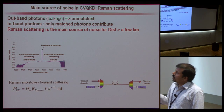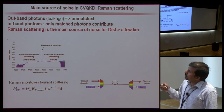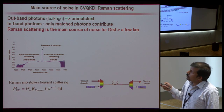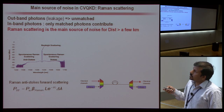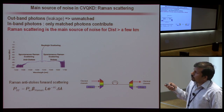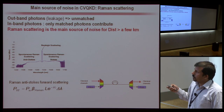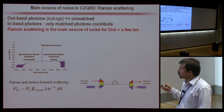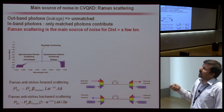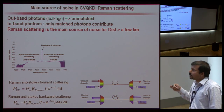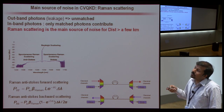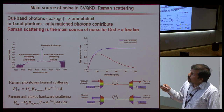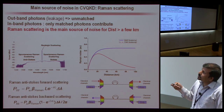There are two configurations. The forward configuration sends the classical channel from Alice to Bob — the power at the input of the DWDM equals the launch power, β_Raman is the scattering cross-section of the fiber, L is the distance, α is the attenuation, and Δλ is the DWDM channel spacing. The backward scattering configuration sends the classical channel from Bob to Alice. The typical backward and forward scattering versus distance is shown here — the backward scattering (red line) saturates after about 21 kilometers, while the forward scattering (blue line) peaks then decreases.